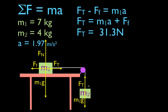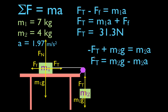We can verify this because the tension force must have the same magnitude in both objects. Applying Newton's second law to mass M2: minus Ft plus M2g equals M2 times its acceleration (1.97 m/s²). Solving for Ft: the tension force equals M2g minus M2 times a, which also gives approximately 31.3 newtons. The tensions match, confirming we have the correct acceleration.